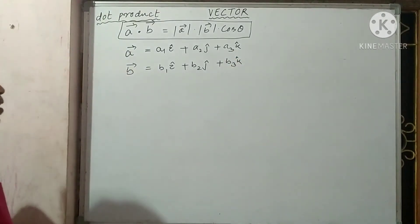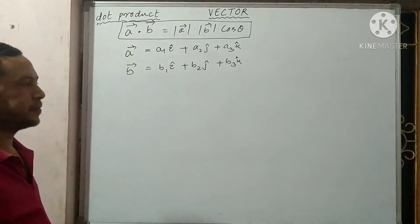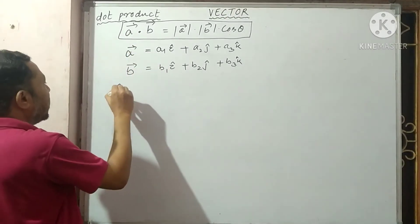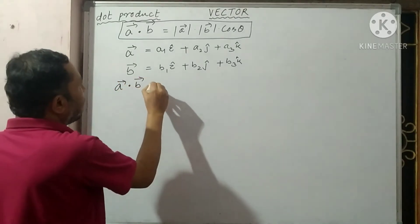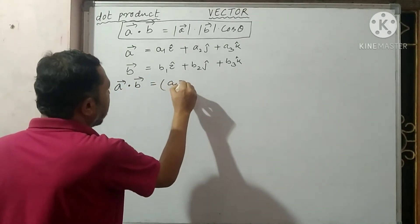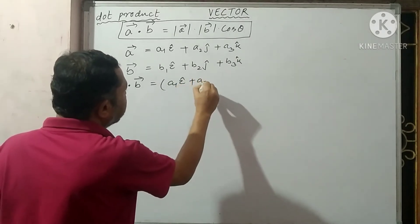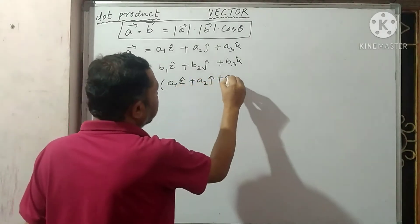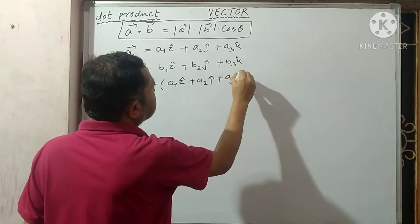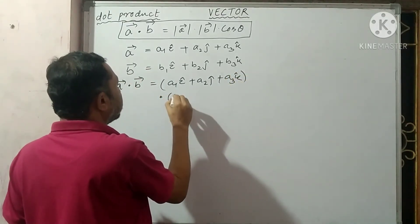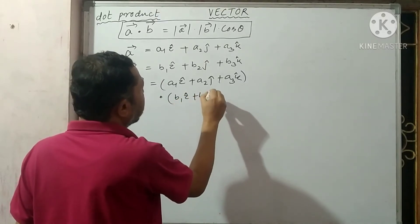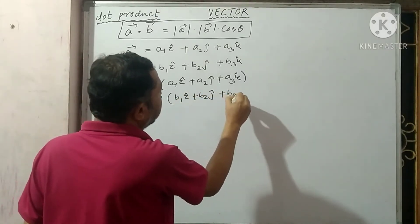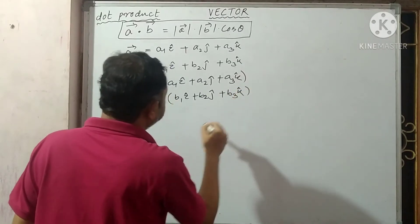Now, how to find out A dot B? Then A dot B is A1 i-cap plus A2 j-cap plus A3 k-cap, dot B1 i-cap plus B2 j-cap plus B3 k-cap.